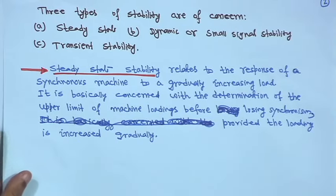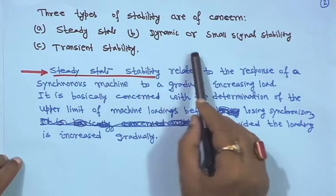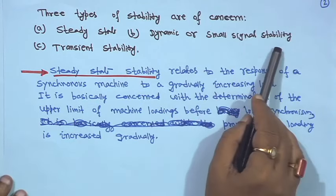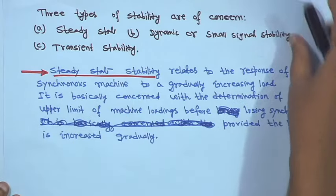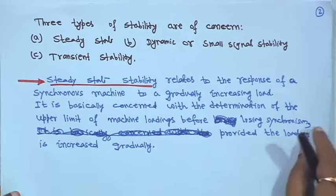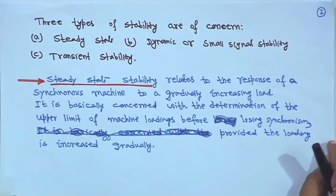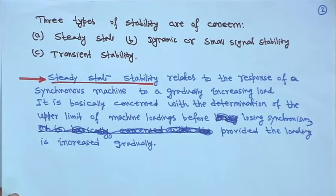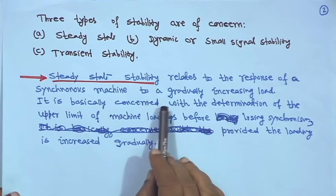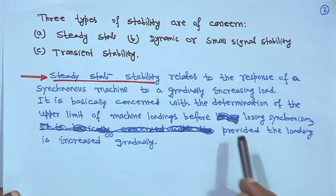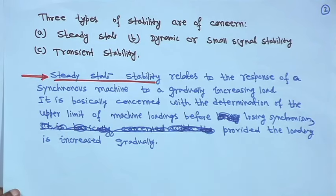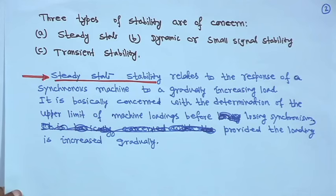When we define stability of the power system, there are three types generally of concern. One is steady state stability, another one is dynamic or small signal stability, and the last one is transient stability. Many other stabilities exist in power systems beyond scope — for example, voltage stability. Steady state stability relates to the response of a synchronous machine to a gradually increasing load, and determines the upper limit of machine loading before losing synchronism.